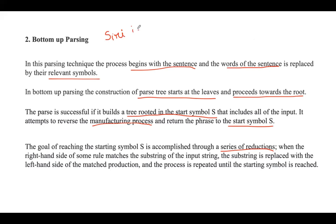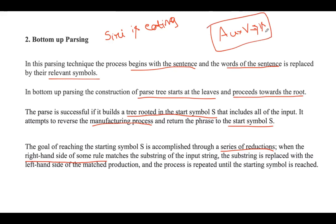For example, consider the input string 'Siri is eating.' I have a production: Auxiliary Verb derives 'is.' When the RHS of this rule — which is 'is' — matches the substring 'is' in the input string, that substring is replaced with the LHS of the matched production, which is Auxiliary Verb.